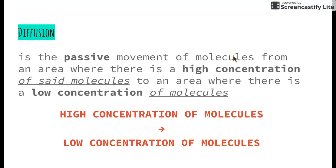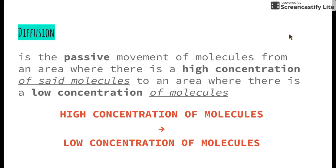Let's start off by having a look at what diffusion is. The definition of diffusion is the passive movement of molecules from an area where there is a high concentration of molecules to an area where there is a low concentration of these molecules. Passive movement doesn't require any energy, so diffusion happens all the time as long as there is a concentration gradient, or a difference in concentration, in different areas.